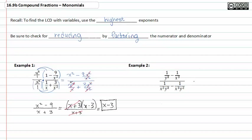In example two, we again have to check to see what the highest exponents are throughout our compound fraction. We can see that x to the third and y to the third are the highest exponents showing up in this compound fraction. So once again, I'm going to multiply by x to the third y to the third over one, divided by x to the third y to the third over one. Remember, this is the same as multiplying by a funny-looking one, because x to the third y to the third over one divided by x to the third y to the third over one is equal to one.